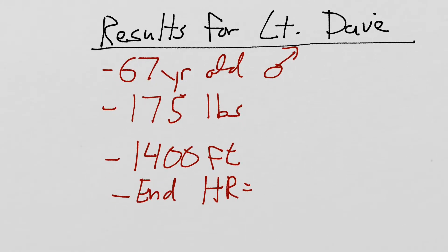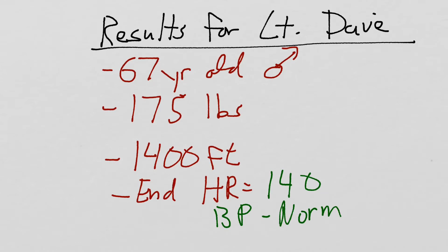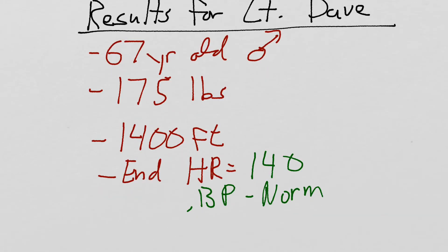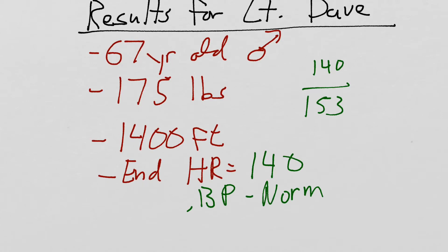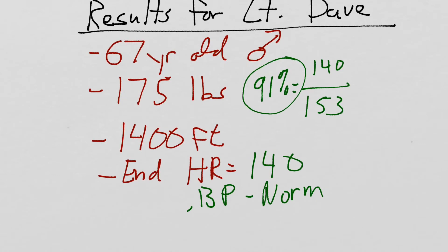His heart rate at the end is about 140 beats per minute, blood pressure is a normal response, and respiratory rate and SpO2 are also normal. Assuming he responded well with no red flags during the test, his age-predicted maximum heart rate is 153, meaning he reached about 91% of his age-predicted maximum. That's a pretty high response, but he seemed to tolerate it well, so we feel he probably had a good response to activity and it's safe to have him do aerobic exercise.